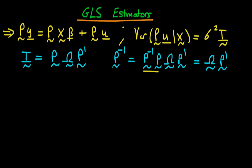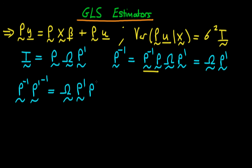Now we want to get rid of the P-transpose on the right-hand side. So we're going to take both sides and multiply them by the inverse of P-transpose. That gives P-transpose inverted equals omega times P-transpose times P-transpose inverted. Again, a matrix times its inverse is just the identity matrix, which when multiplied by omega is just equal to omega. So now we have an expression for omega in terms of P and P-transpose inverted.